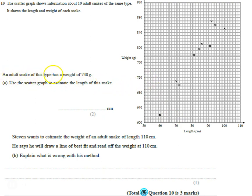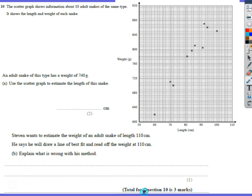Another snake of this type has a weight of 740g. Use the scatter graph to estimate the length. This is a pretty standard thing to do. The first thing we're going to do is draw a line of best fit.